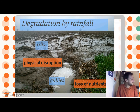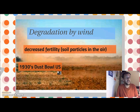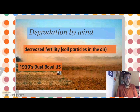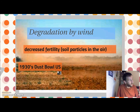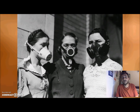Something we are probably more familiar with here in the UAE is degradation by wind, which leads to decreased fertility as soil particles get picked up and taken away by the wind. A very tragic example of this is the 1930s Dust Bowl crisis in the central United States, when thousands of farms had to be evacuated. People lived for months on end with masks because everything was covered in dust at that time.